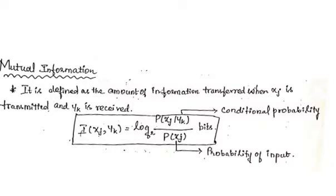One definition: given two random variables, mutual information is defined as the amount of information transferred when x_j is transmitted and y_k is received. The notation is i(x_i, y_j), or i(x, y) in general. The formula is: i(x_j, y_k) = log base 2 of [ p(x_j | y_k) / p(x_j) ].